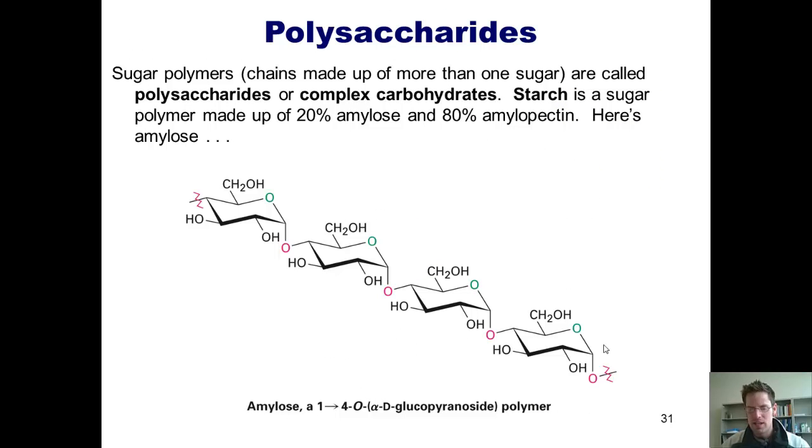There are several polysaccharides that are extremely important and essential to life on our planet. One of these is starch, which is technically a mixture of two different polysaccharides, amylose and amylopectin. So starch, once again, is a sugar mixture that's made up of 20% amylose and 80% amylopectin.